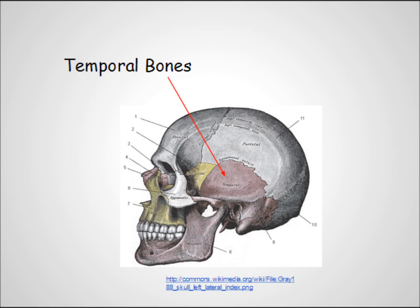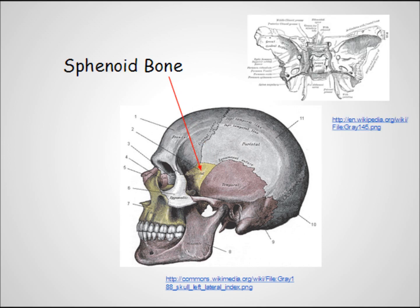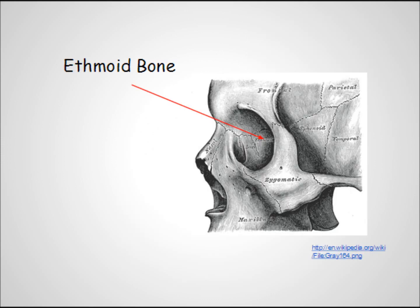Moving forward again, we have the two temporal bones, which are above and behind the ears. And then the sphenoid bone, a bat-shaped bone that goes all the way through the skull from in front of the ears to the back of the eye socket. Finally, we have the ethmoid bone, a small bone that separates the cranial cavity from the nasal cavity. It also forms a small part of the posterior medial eye socket. So there are the eight bones of the skull.